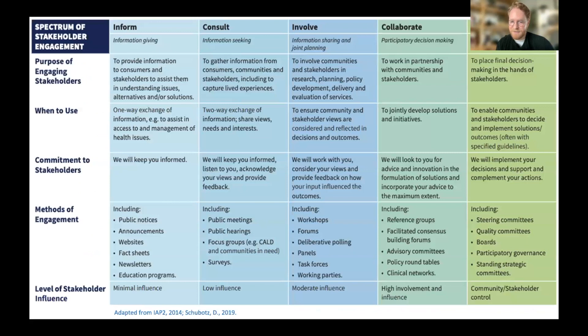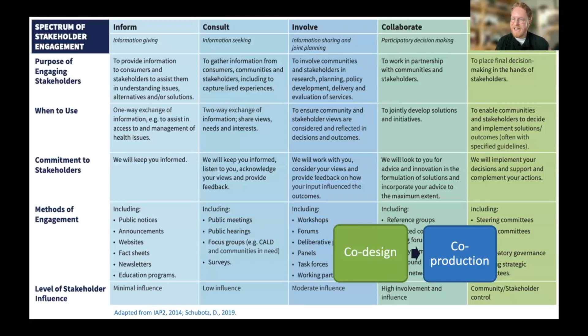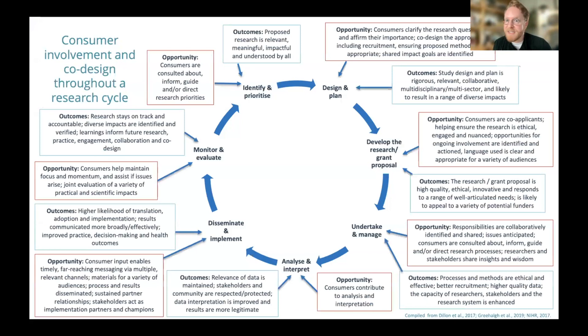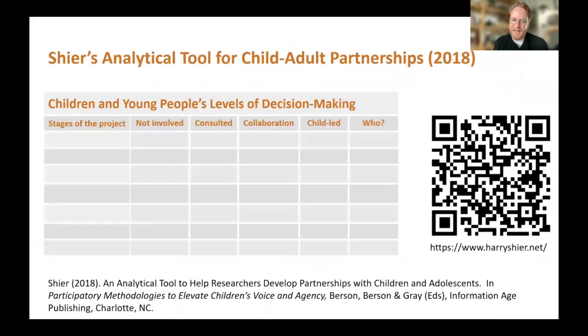In relation to the engagement spectrum, co-design sits more at the planning phase, while co-production involves engagement across the entire lifecycle of a project. A useful tool — provided by Harry Shire — is a simple table reflecting on levels of research stages and levels of engagement, to think about where involvement might actually work and for what purpose. There are all sorts of ways and opportunities to involve consumers across a research spectrum, and I'd encourage you to look at this resource in your own time.